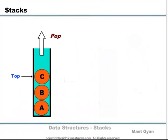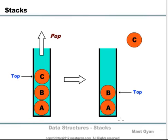Now let's try some removal operations on the stack. Consider the same old container with three objects A, B and C. Object C is the top of the stack. Hence, if you want to remove an object from the stack, it has to be C. The operation of removal in stack terminology is called a pop operation. Here we are trying to pop an object from the stack. C is the popped object and the stack is left with two objects B and A. Among B and A, B is the last inserted object, hence it becomes the new top of the stack.